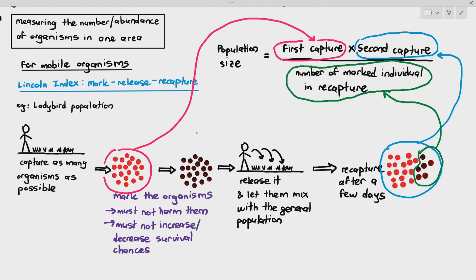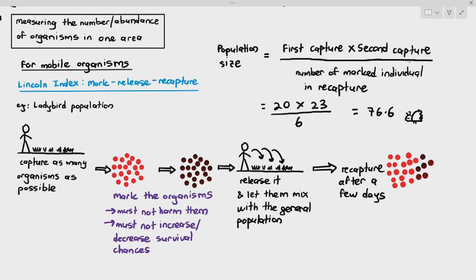So for example, the first capture was 20. Second capture was 23. And the one that were marked individuals in the recapture was 6. So you will get a value of 76.6. There's no such thing as 0.6 ladybirds. It's not like half a half-eaten ladybird. So you round it up or round it down. If it's 0.5 and above, you round it up. If it's 0.4 and below, you round it down. So in this case, there are 77 ladybirds in the habitat.